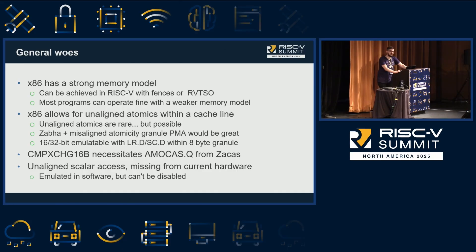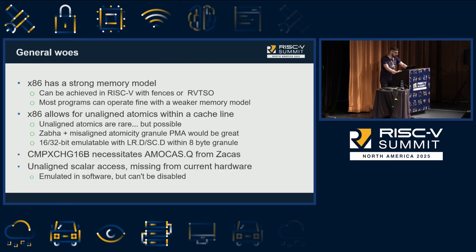Also, in later MSVC compiler versions there is a feature called Volatile Metadata that tells you exactly where you need to insert fences, so you don't insert them everywhere and ruin performance. Another issue is that x86 allows for unaligned atomics within a cache line. We could use the misaligned atomicity granule PMA to achieve the same, and we would probably also need the Zalasr extension for byte and halfword atomics. If we don't have that, there is the ability to emulate 16 and 32-bit misaligned atomics with LR/SC sequences, but that is only within an 8-byte granule — not a cache line — so it may cause problems.